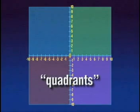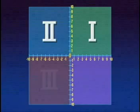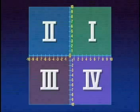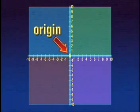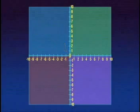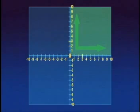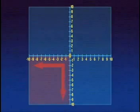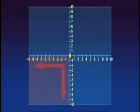The quadrants are labeled counterclockwise as the first, second, third, and fourth. Where the two axes cross is called the origin. Points to the right and above the origin are labeled with positive numbers: 1, 2, 3, and so on. Points to the left and below the origin are labeled with negative numbers: negative 1, negative 2, negative 3, and so forth.